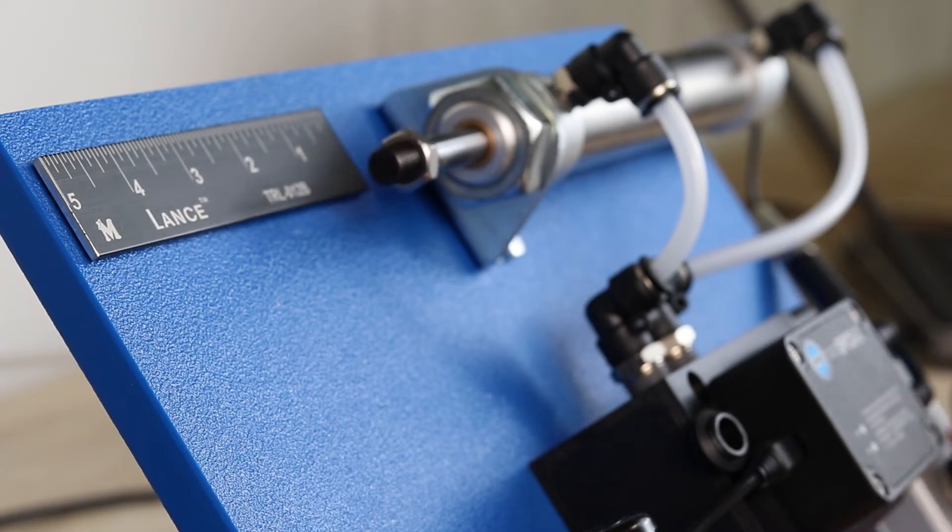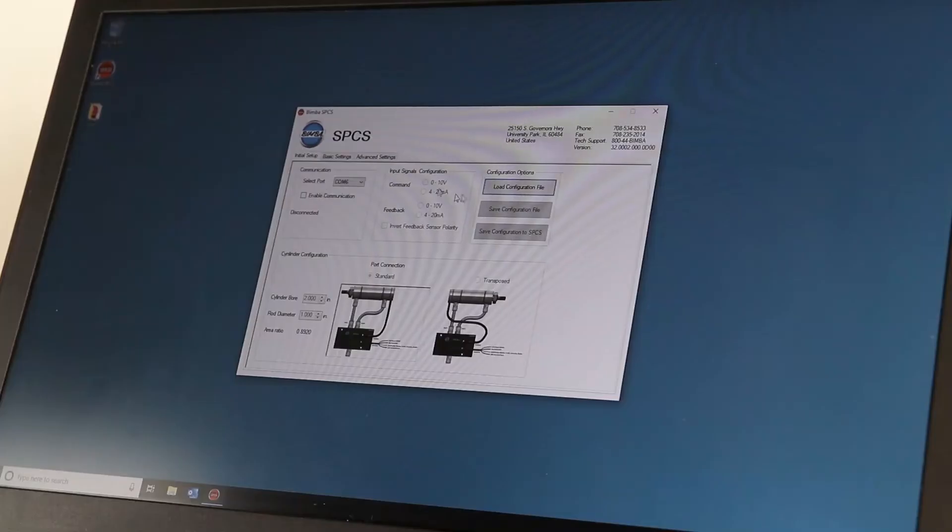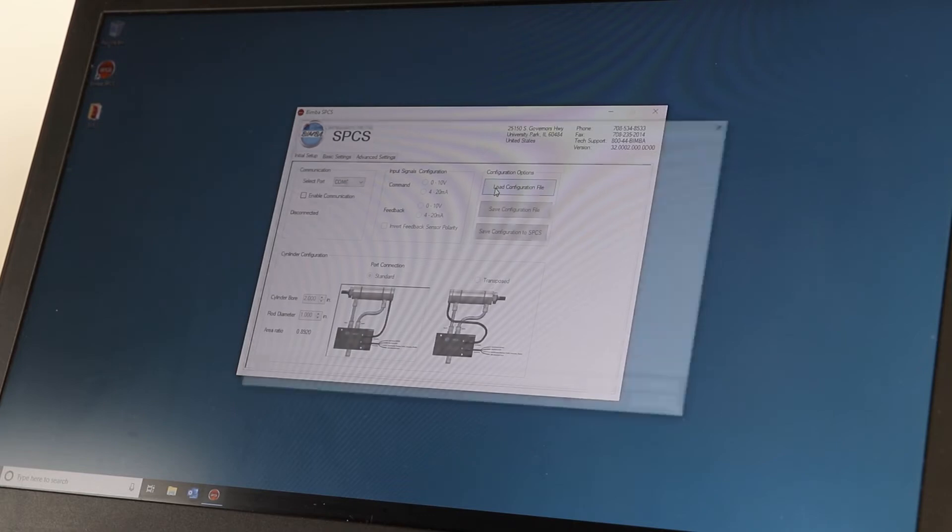By connecting a position feedback cylinder and PLC, you can adjust positioning with predetermined motion profiles, but that leaves you unprepared if the material or load changes.